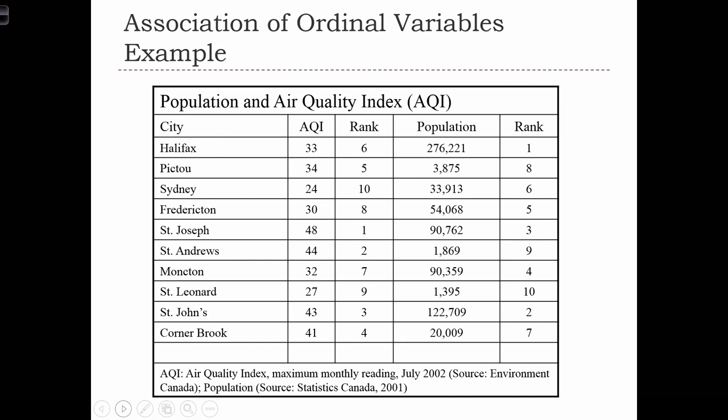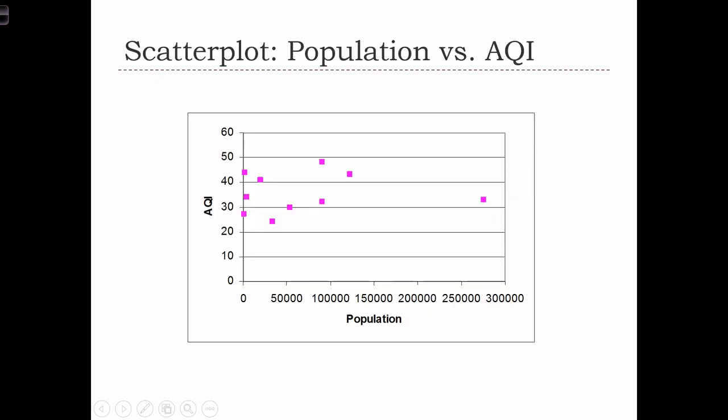Here's our data set. We have 10 Canadian cities on the east coast of Canada in the maritime provinces. For each city we've recorded their AQI, their air quality index value, and their population. We've also identified the ranking of both of these two variables. So St. Joseph is the city with the highest level of AQI, but Halifax is the city with the largest population.